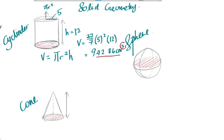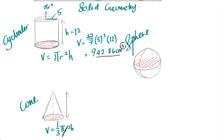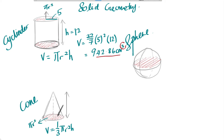Next is the cone. Similar to the cylinder, the formula also has pi r squared h, but because of the pointy top it has a factor of 1 over 3. So the full formula is one-third pi r squared h. Pi r squared is also the area of the circle at the base.